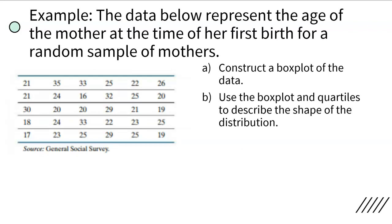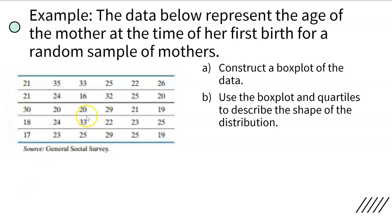Here's an example. The data below represent the age of the mother at the time of her first birth for a random sample of 30 mothers. There are 30 numbers here — 21, 21, 30, 18, 17, and so forth. What we want to do is construct the box plot of the data. In order to construct the box plot, we have to determine the five-number summary, and then use the box plot and the quartiles to describe the shape of the distribution.